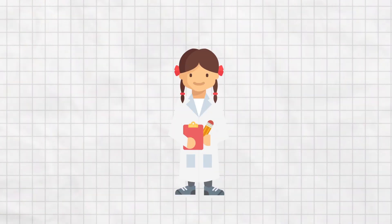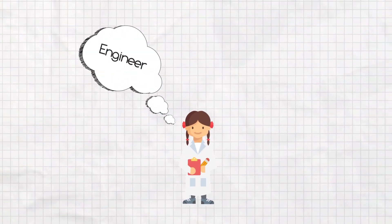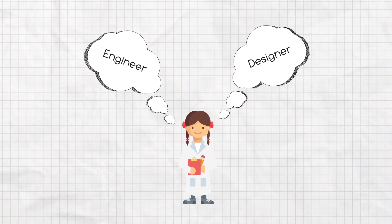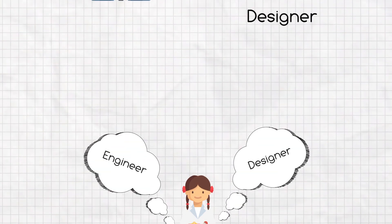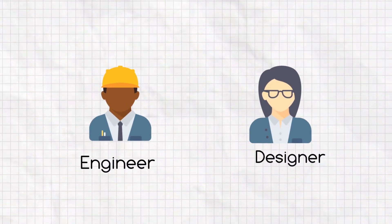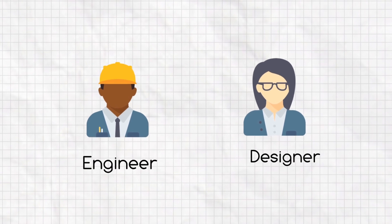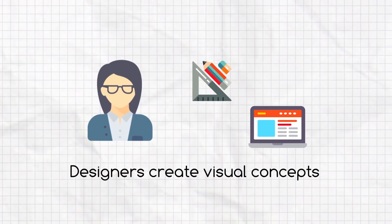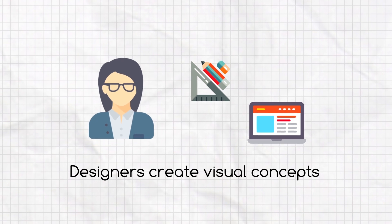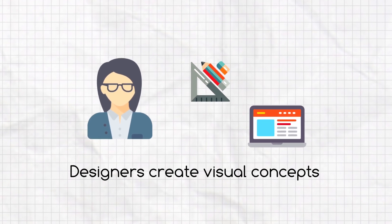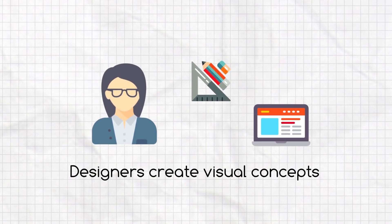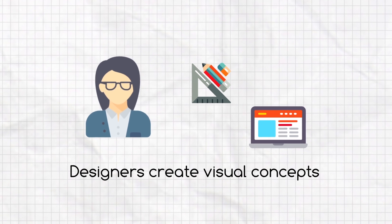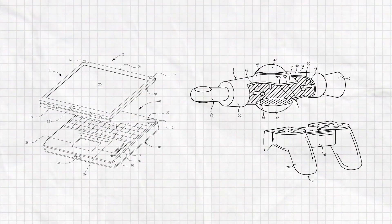When designing a prototype, an inventor thinks and works like an engineer and a designer. In case you're not sure what kind of work engineers and designers do, let me explain. Designers create visual concepts by hand or using computer software to communicate ideas that inspire and inform the viewer. For an inventor, it would be a drawing that lets people know how the prototype will look when it's built.